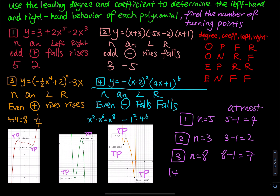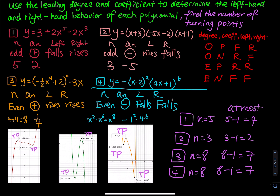For number 4, since the highest degree is equal to 8, you have 8 minus 1, which equals 7 as well. So the last graph has at most 7 turning points. I'm not saying it's exactly 7 — I'm saying at most 7, meaning the maximum is 7.